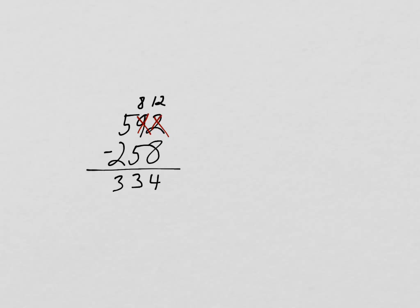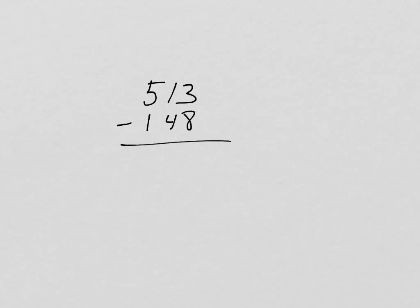Let's look at another example. 513 minus 148. Let's do our check first. Can we subtract in the ones place? Well, no, we have 3 ones and 8 ones, so I'm going to run into a problem unless I borrow. So, I'm going to borrow here. That becomes 0 tens, and I now have 13 ones instead of 3 ones.